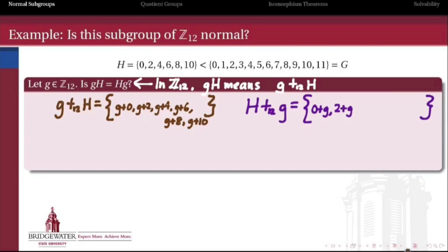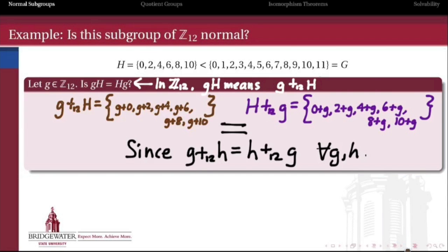What about adding G on the other side? Well, that's 0 plus G, 2 plus G, and so forth. And naturally, because the addition of two integers modulo 12 is a commutative operation, these two cosets are always exactly the same for a given element G. So because this operation was commutative, the left cosets and the right cosets were of course the same thing.